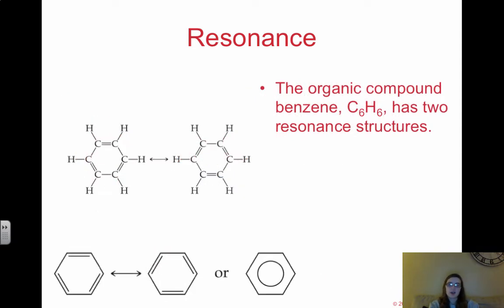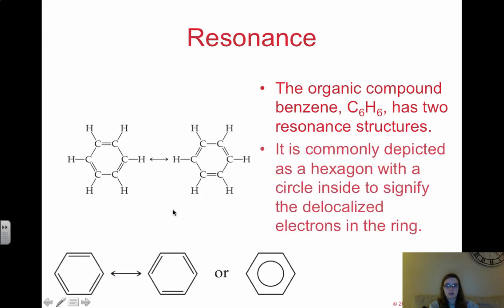Another example of resonance is the organic compound benzene. Benzene has two cyclic, circular resonance structures — one with double bonds between certain carbons, and one with double bonds in the other locations. These resonance structures are represented with a hexagon and a circle inside, showing that electrons are moving about the double bonds. We'll get into cyclic structures and benzene when we cover organic chemistry. For now, just know that electrons move through the double bonds and aren't fixed in one location.